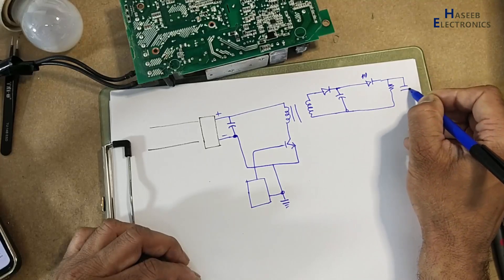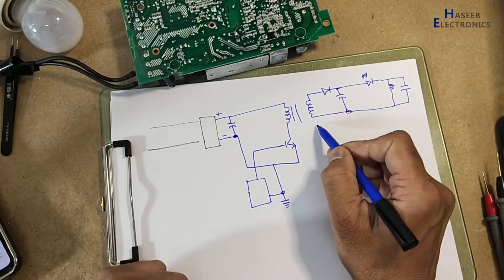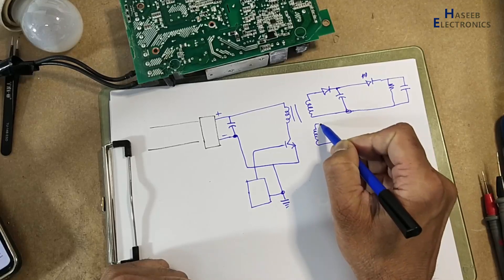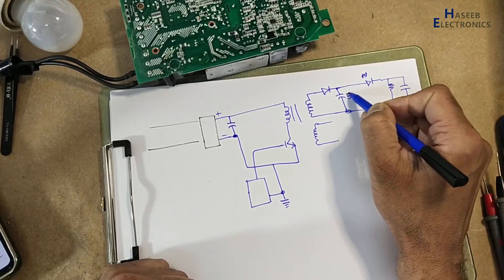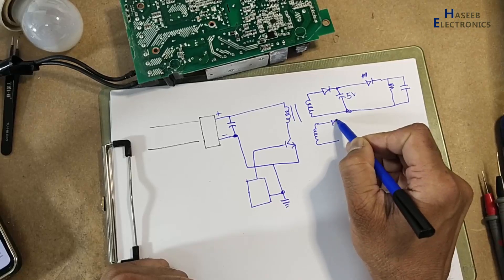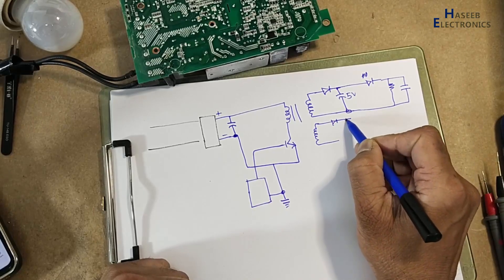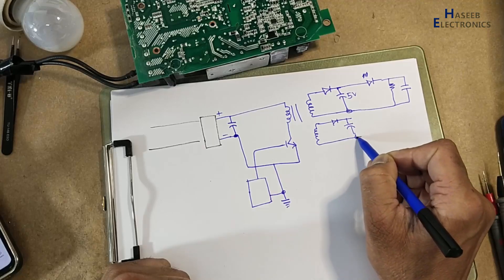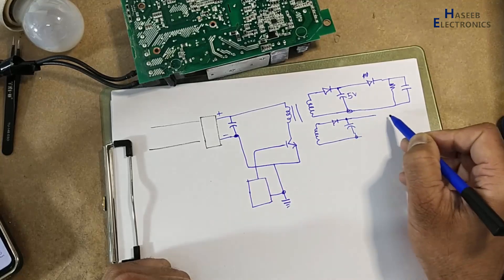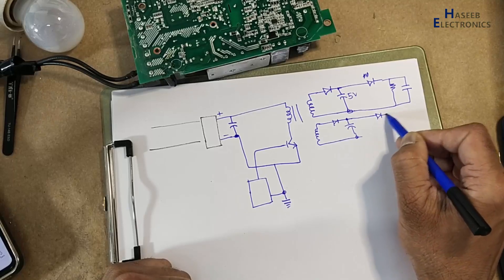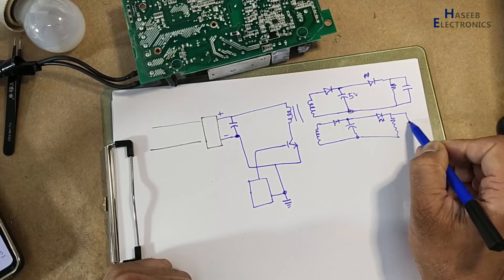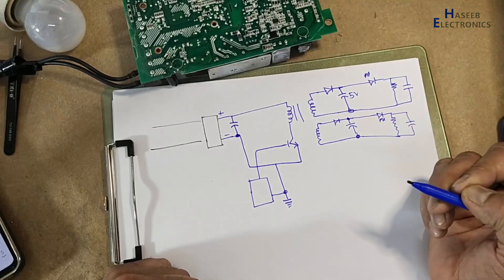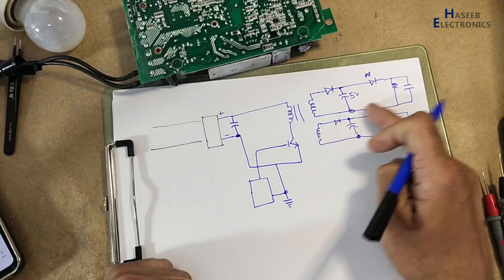There is a capacitor, and in the same transformer there is another winding. One winding might be providing 5 volts and another providing 12 volts. There is an LED and similar loads in these circuits. So now there are two separate circuits in this portion.